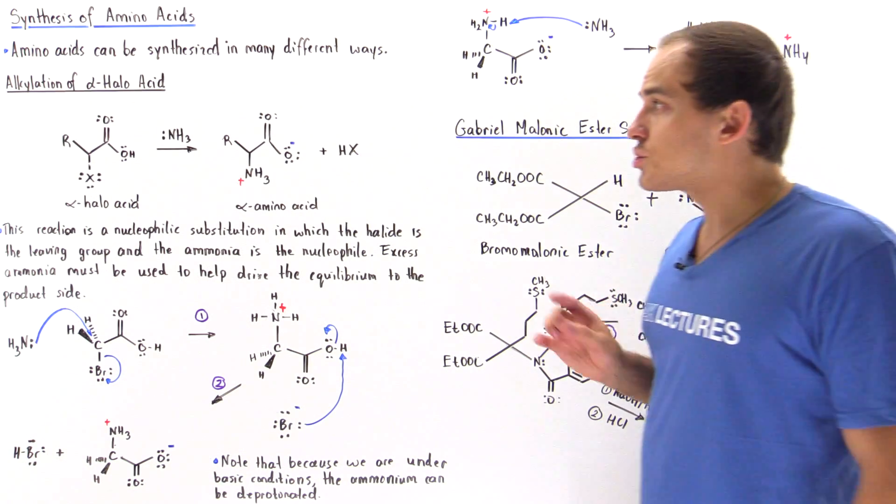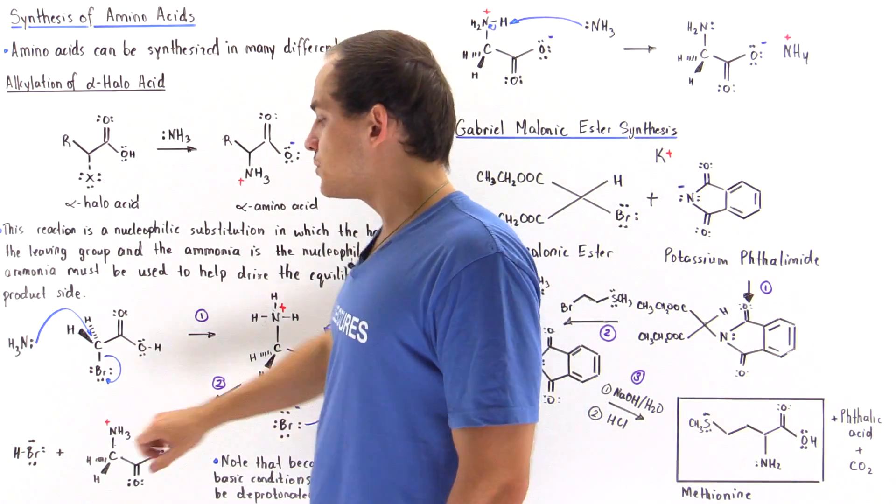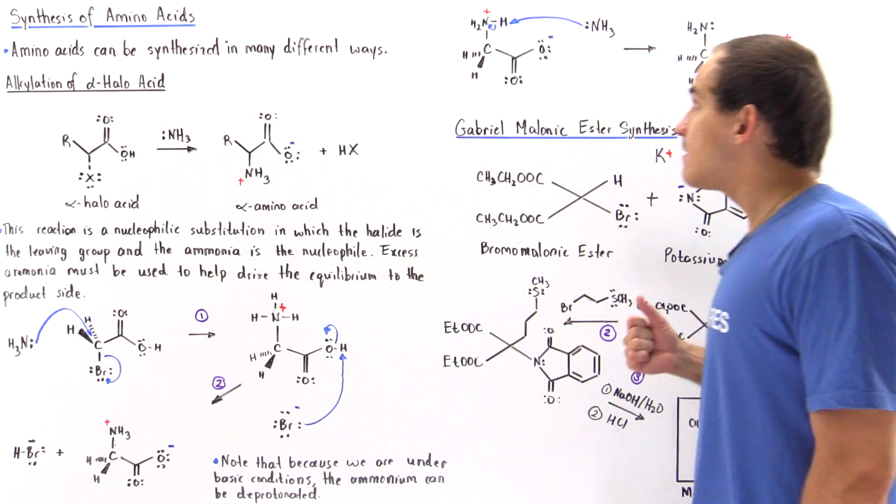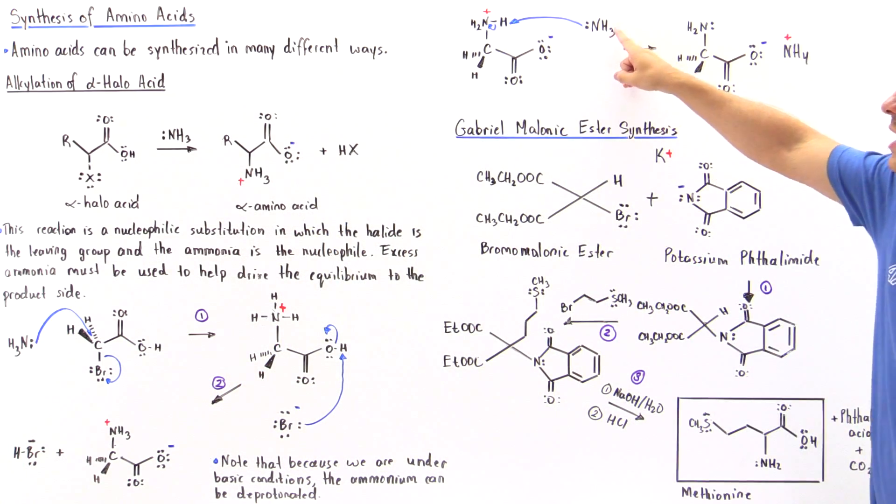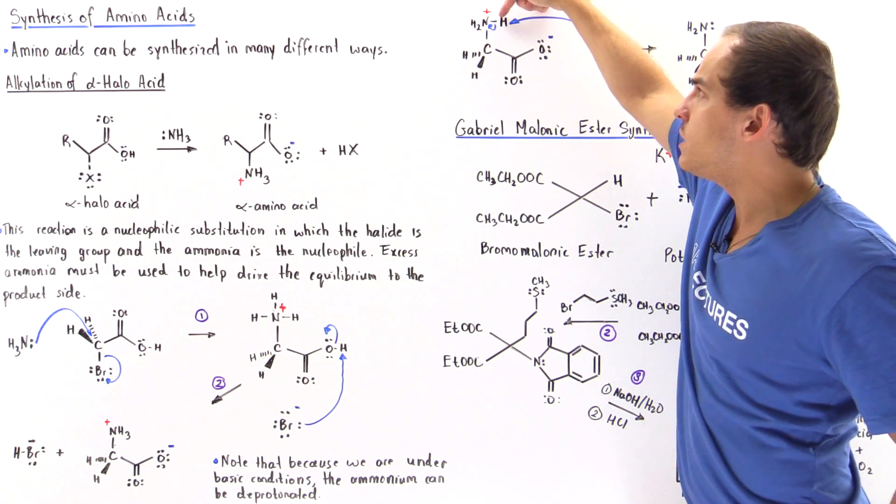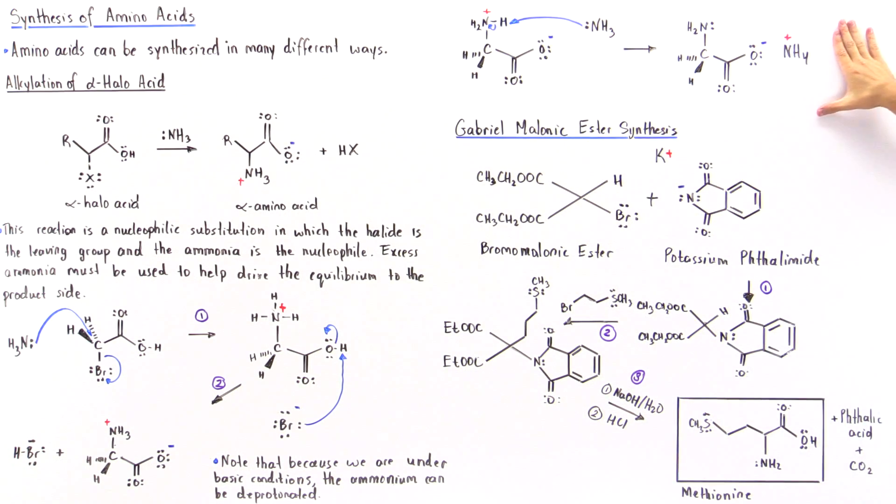Now, notice because we are under basic conditions, this might not be the final product. Because we have excess ammonia, the ammonia will basically deprotonate this ammonium to form this product in which we have no charge on the nitrogen. We have the primary amine.